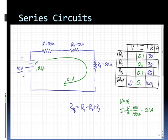Now I know two things in those rows. I can figure out the others. If V equals IR, V for R1, the voltage drop across R1, this voltage drop is going to be 0.1 amp times 30 ohms or 3 volts. So I drop 3 volts across R1. Likewise I drop 2 volts across R2 and 5 volts across R3.